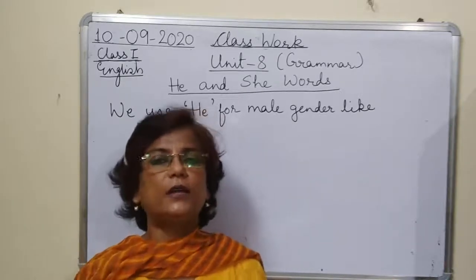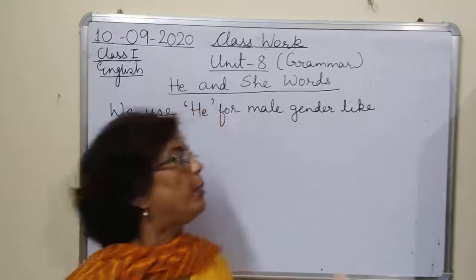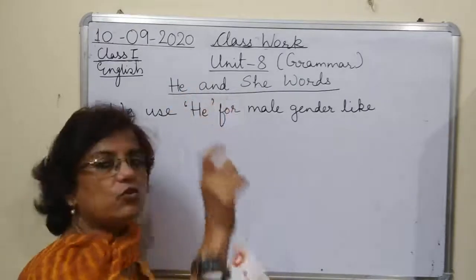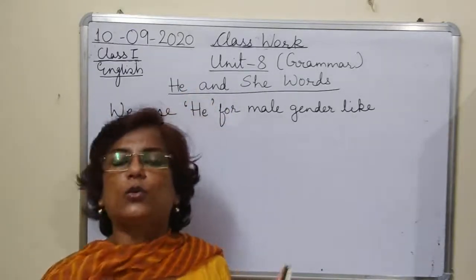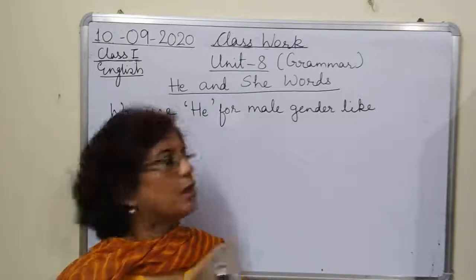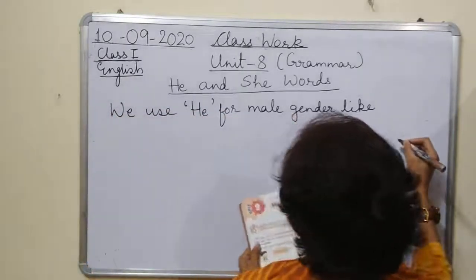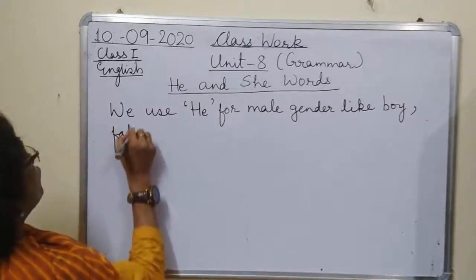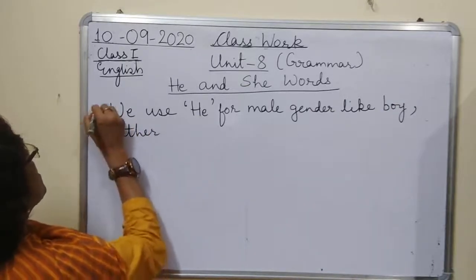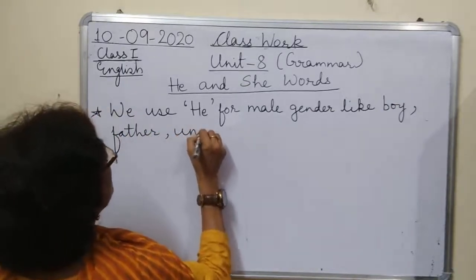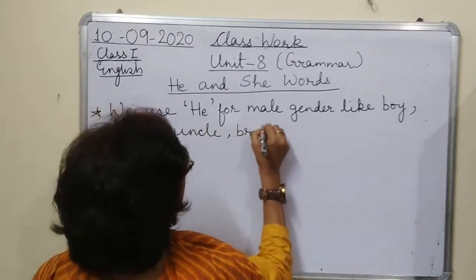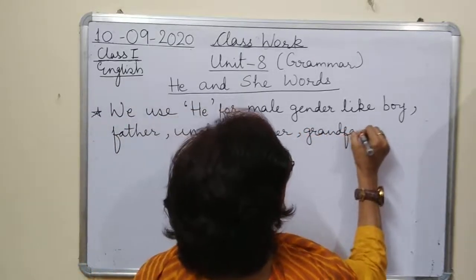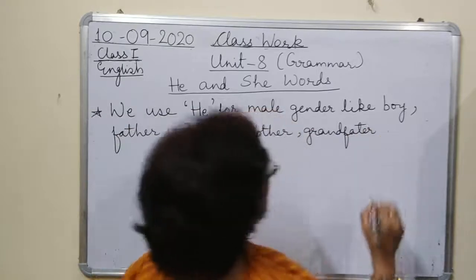We use 'he' for male gender and 'she' for female gender. But this particular word — he and she — these two words are used only for persons. We use he for male gender like: boy, father, uncle, brother, grandfather.